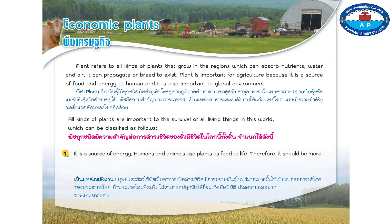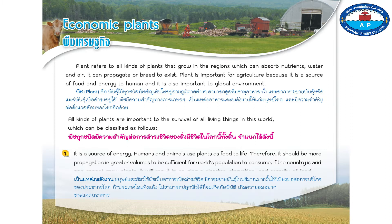Number one, it is a source of energy. Humans and animals use plants as food to live. Therefore, it should be propagated in greater volumes to be sufficient for the world's population to consume. If a country is arid and cannot grow plants, it will result in causing a disaster, starvation, and scarcity of food.